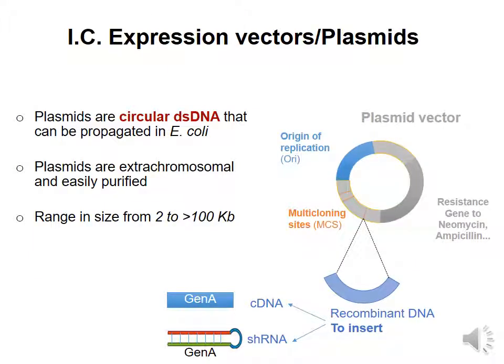The third element are expression vectors or plasmids. Plasmids are circular double strand DNA molecules that can be propagated in bacteria. The most common bacteria used in clonings are E. coli.